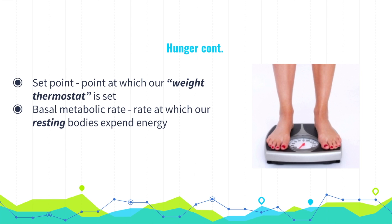In general, if we start losing weight, our hunger increases and our energy expenditure decreases. The opposite happens when we start to gain weight. All humans and many animals have a set point — the point at which our weight thermostat is set. When body weight dips below the set point, hunger increases and metabolism drops to restore the weight. Because set points can change over our lives, many researchers prefer to call it the settling point.